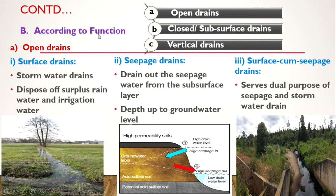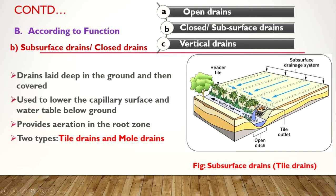Closed or subsurface drains are drains laid deep below the ground surface. No drainage structure is visible at the surface — there are pipe-like structures placed below. Water flows into these pipes, which discharge to a common outlet. These are known as subsurface drains.